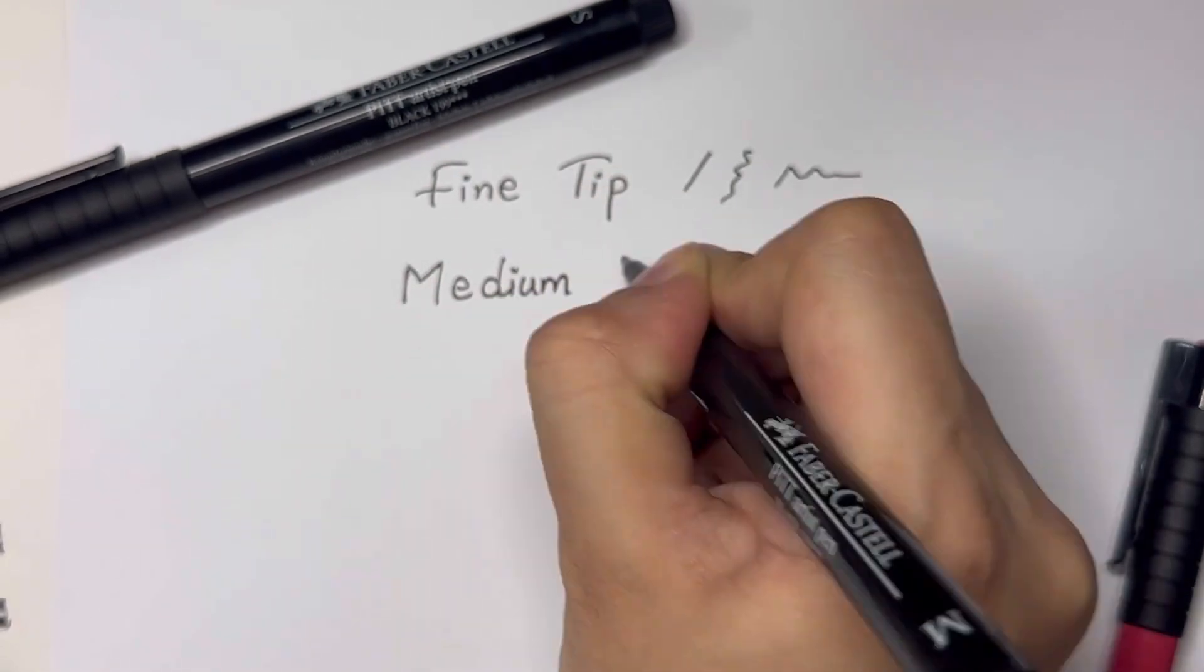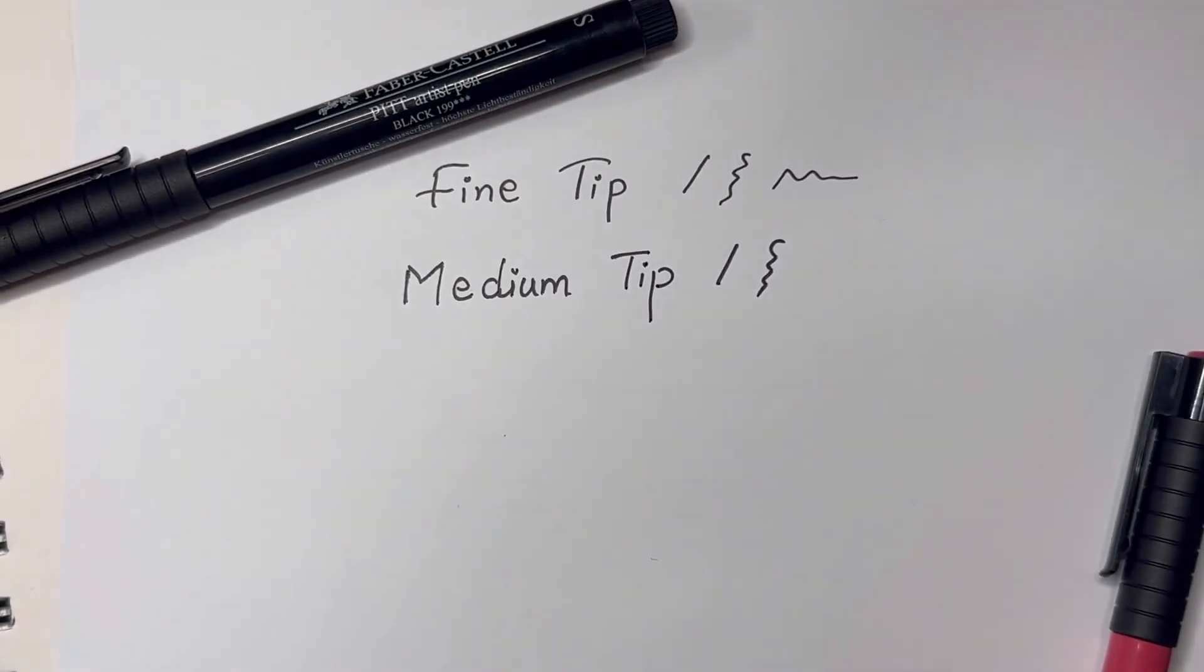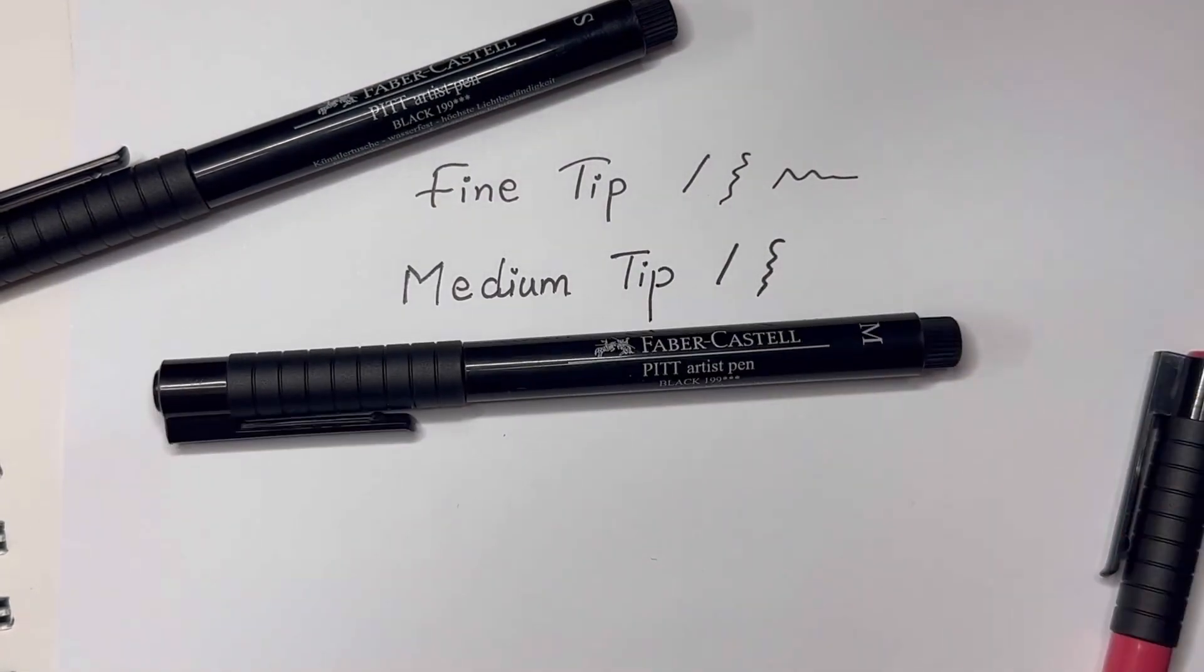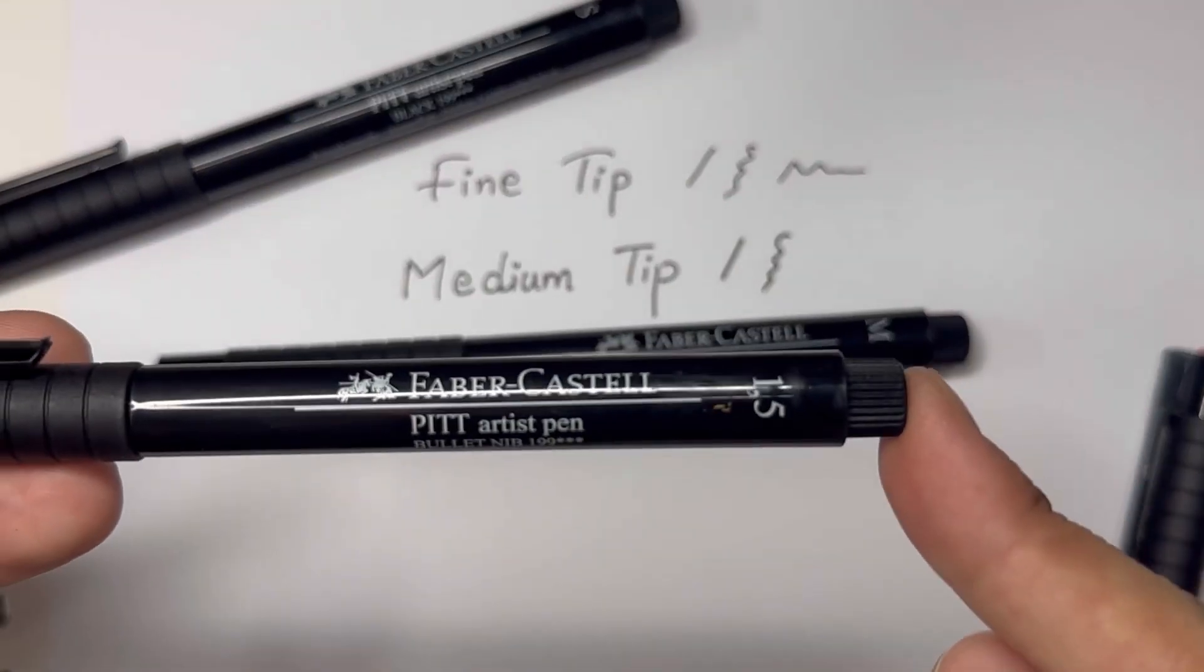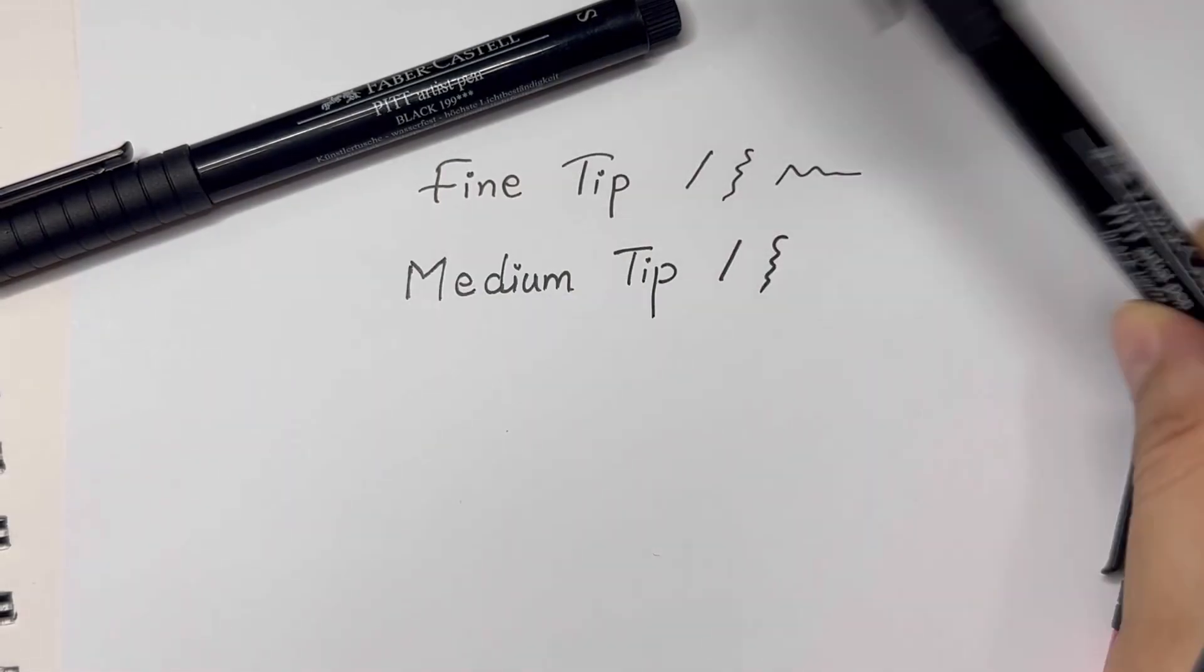Next we have the 1.5, and this one is similar to a sketch tip but this is a little bit smoother than the normal sketch pen.